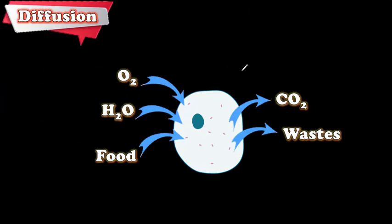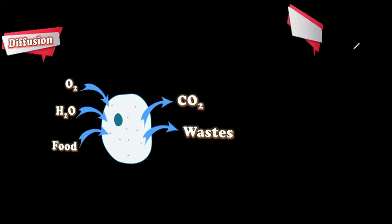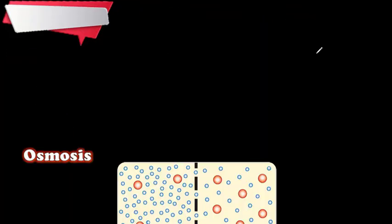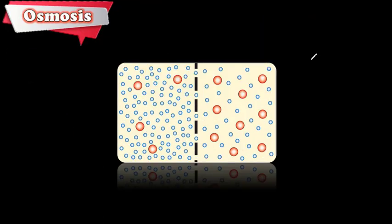We spoke before about diffusion — the movement of particles from an area of high concentration to an area of lower concentration. Now we're going to look at osmosis. Osmosis is also diffusion, but between liquids. It is the diffusion of liquid particles, like water.